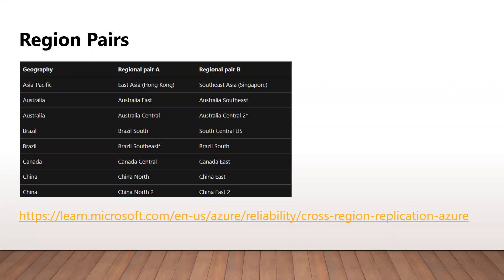For instance, if you look at the Australia geography, Australia East is paired with Australia Southeast. And similarly in the China geography, China North is paired with China East. By now you would have noticed this is a static pairing, where you don't have control to decide a region pair when creating your resources. You can refer to the link on screen to have a look at regional pairs for all the geographies.